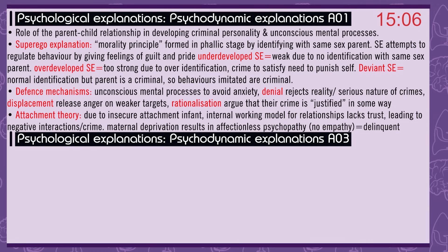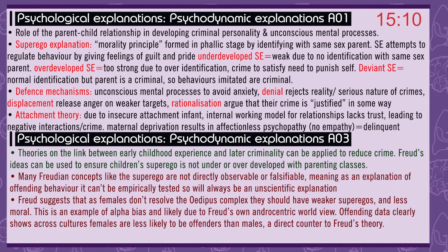Theories on the link between early childhood experience and later criminality can be applied to reduce crime. Freud's ideas can be used to ensure children's superego is not under- or overdeveloped, through parenting classes. Many Freudian concepts like the superego are not directly observable or falsifiable, meaning as an explanation of offending it can't be empirically tested — so it will always be a non-scientific explanation. Freud suggests that as females don't resolve the Oedipus complex, they should have weaker superegos and be less moral — this is an example of alpha bias, likely due to Freud's androcentric worldview. Offending data clearly shows across cultures that females are less likely to be offenders than males, a direct counter to Freud's theory.